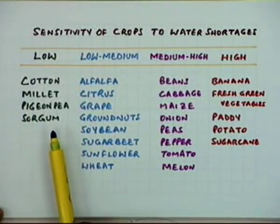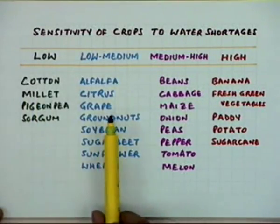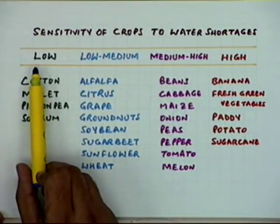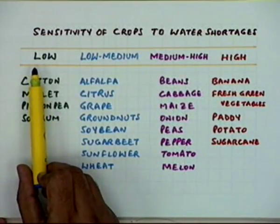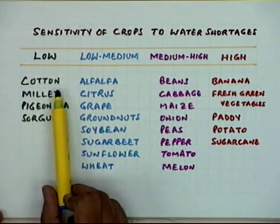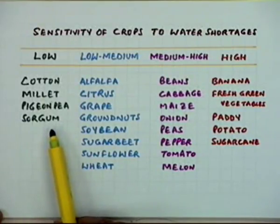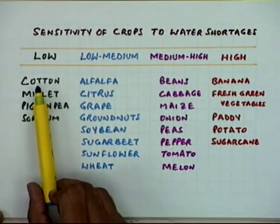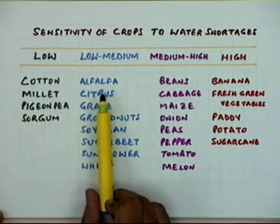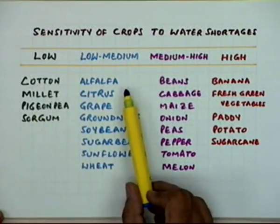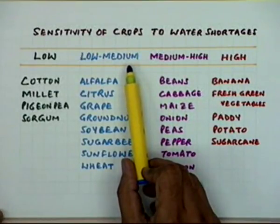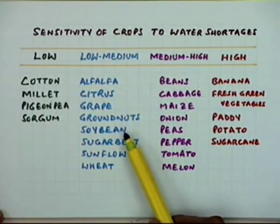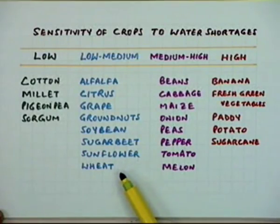Most crops are broadly divided into four groups. The crops having low sensitivity to water shortages can be cotton, millet, pigeon peas, and sorghum. There are some crops with higher sensitivity than these — they come into the category of low-medium sensitive crops: alfalfa, citrus, grapes, ground nuts, soybean, sugar beet, sunflower, and wheat. The next category is medium-high sensitivity.